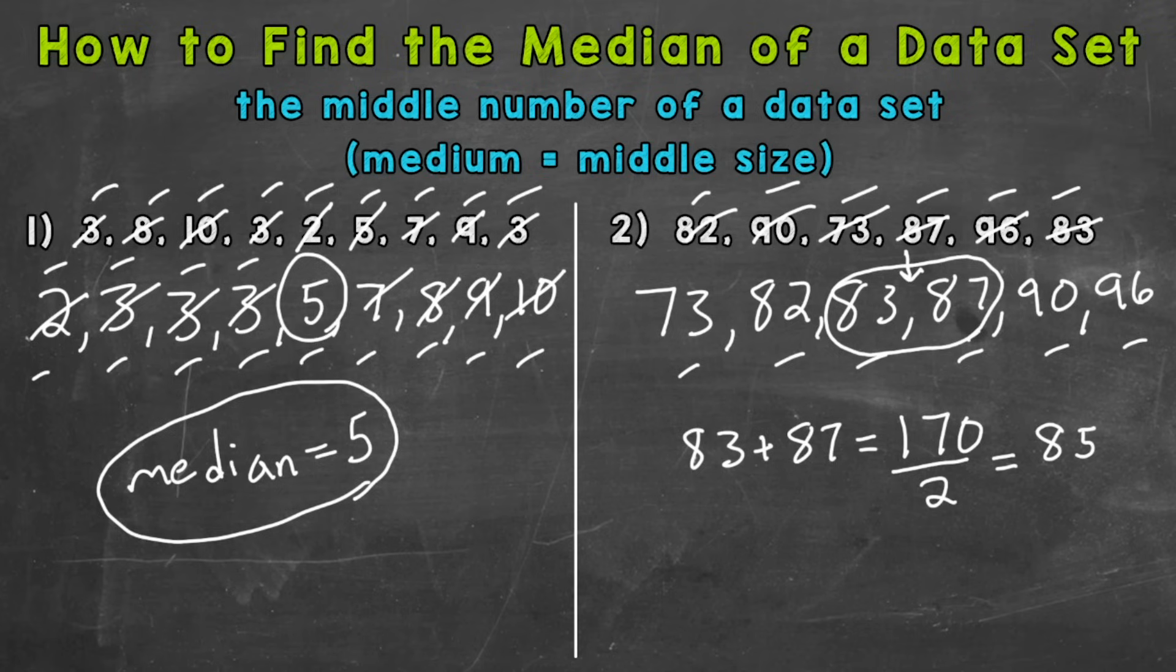So our median equals 85. And let's double check that we have the same amount of numbers on the left and right of our two numbers in the middle. So we have one, two and one, two. So we did pick the two middle numbers. We found that average and that gives us our median.